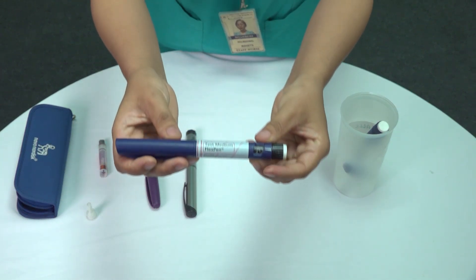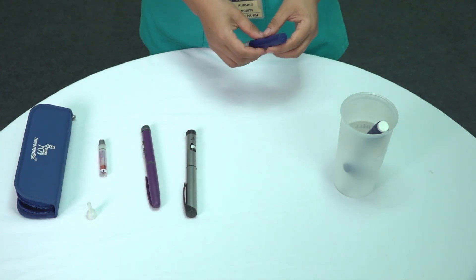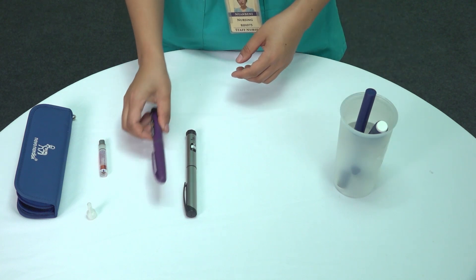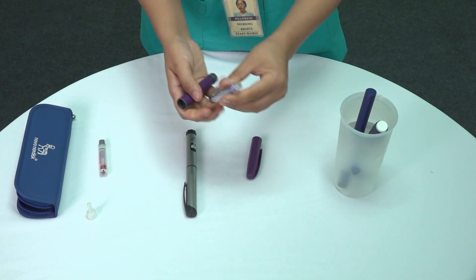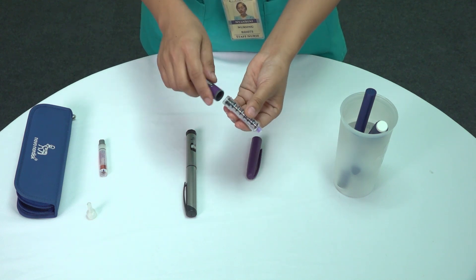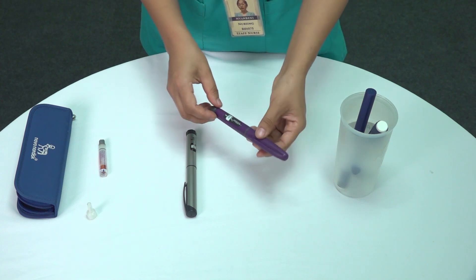Next, we have permanent pens. These pens allow patients to replace the insulin cartridge, so they don't need to buy a whole new pen each time. Once the insulin runs out, only the cartridge is replaced, not the pen.